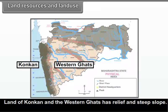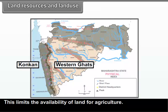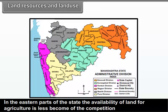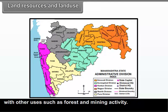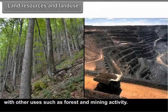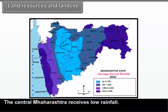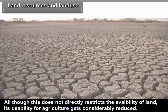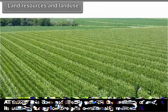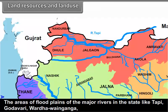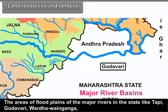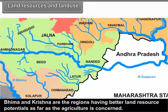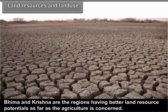They will give some idea about the constraints of using the land resource particularly for agriculture. Land of Konkan and the Western Ghats has high relief and steep slope, which limits the availability of land for agriculture. In the eastern parts of the state, the availability of land for agriculture is less because of competition with other uses such as forest and mining activity. The central Maharashtra receives low rainfall. Although this does not directly restrict the availability of land, its usability for agriculture gets considerably reduced. The areas of floodplains of the major rivers like Tapi, Godavari, Wardha, Wainganga, Bhima and Krishna are the regions having better land resource potentials as far as agriculture is concerned.